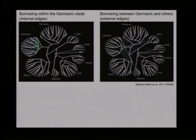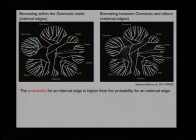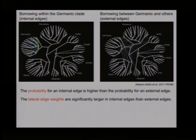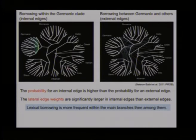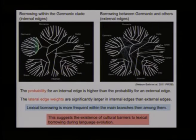We can also ask whether there are barriers or limitations to borrowing among languages. Comparing borrowing within the Germanic clade versus between Germanic languages and the rest of Indo-European, we find that the probability for an internal edge is higher than for an external edge — meaning borrowing within a clade is more probable than borrowing outside it — and lateral edge rates are significantly larger for internal than external edges. This means lexical borrowing is more frequent within main branches (language families) than among them, suggesting there are cultural barriers for lexical borrowing during language evolution.